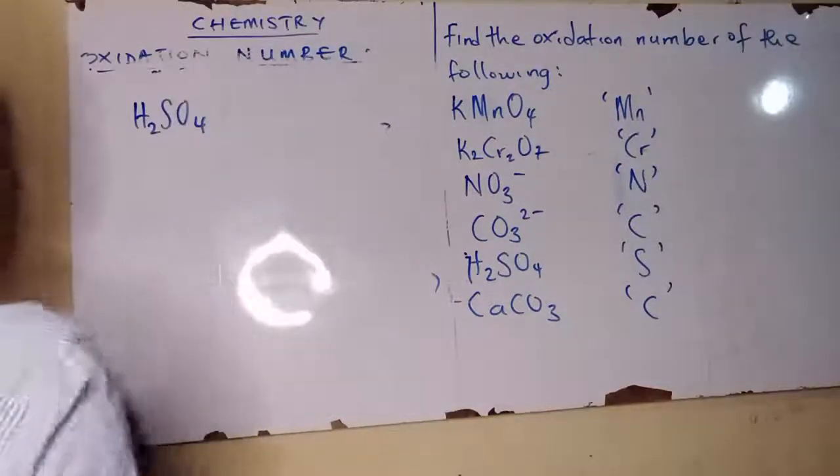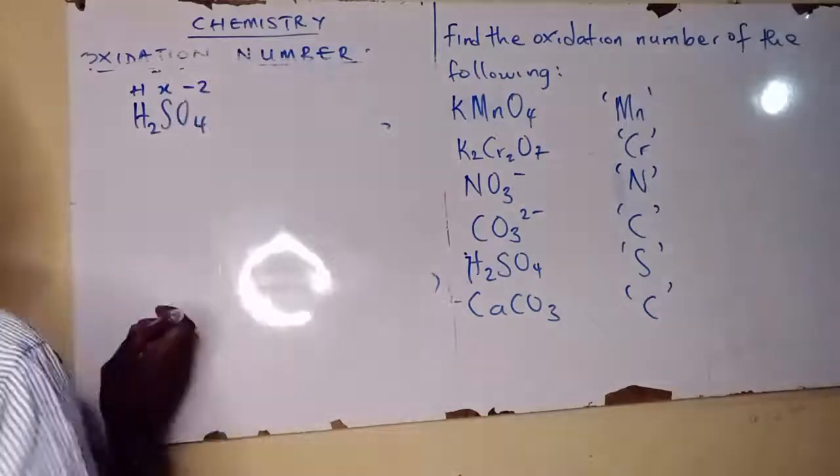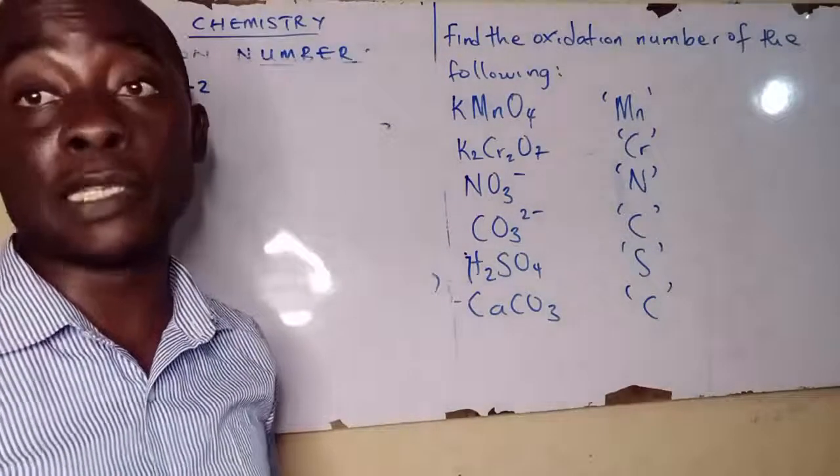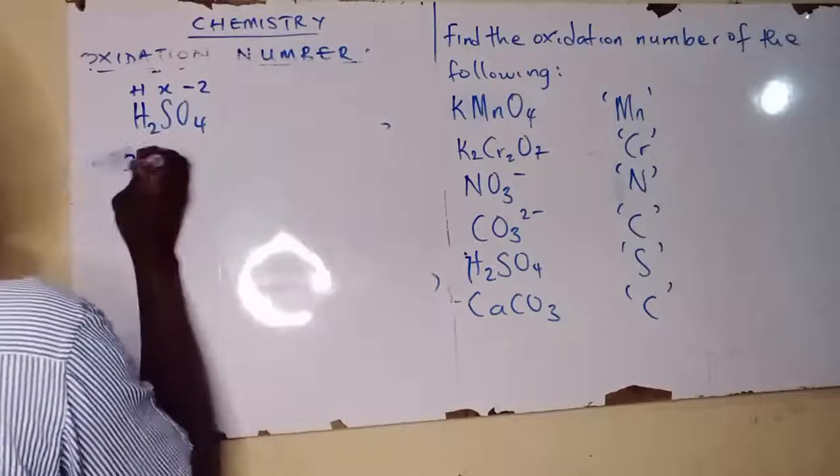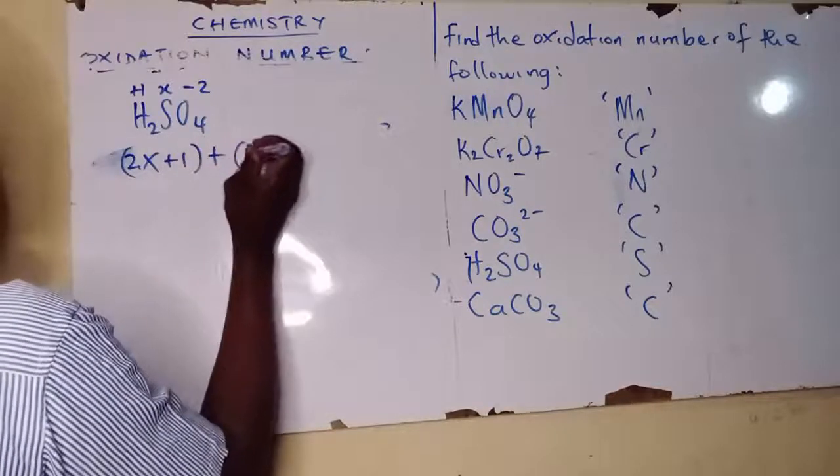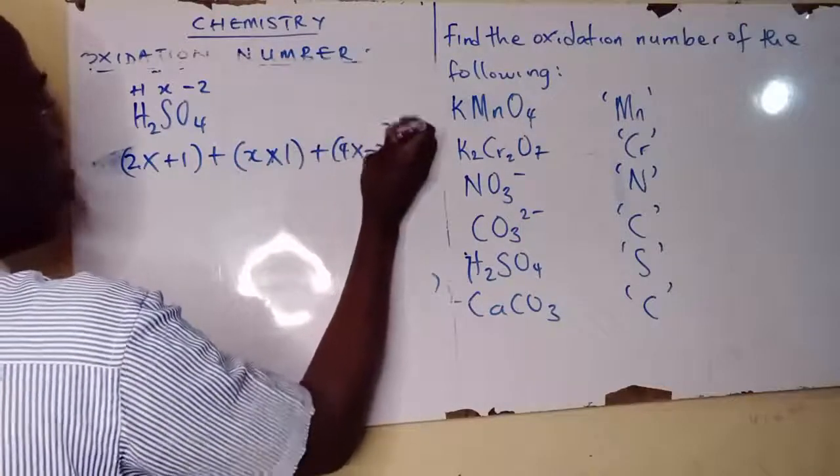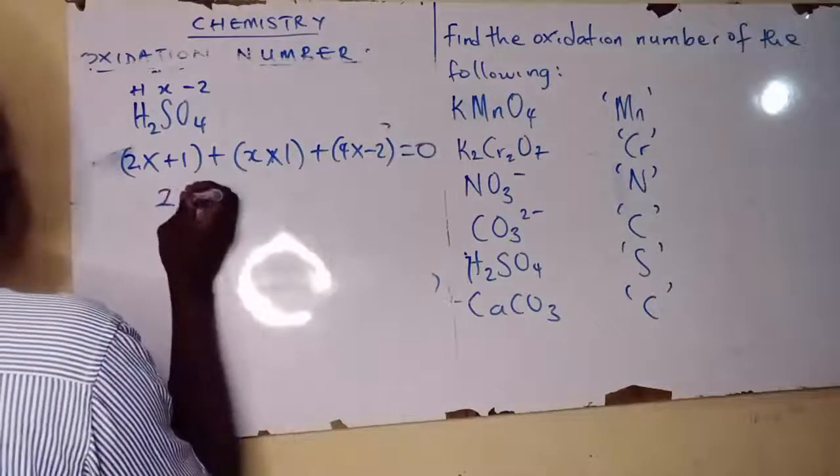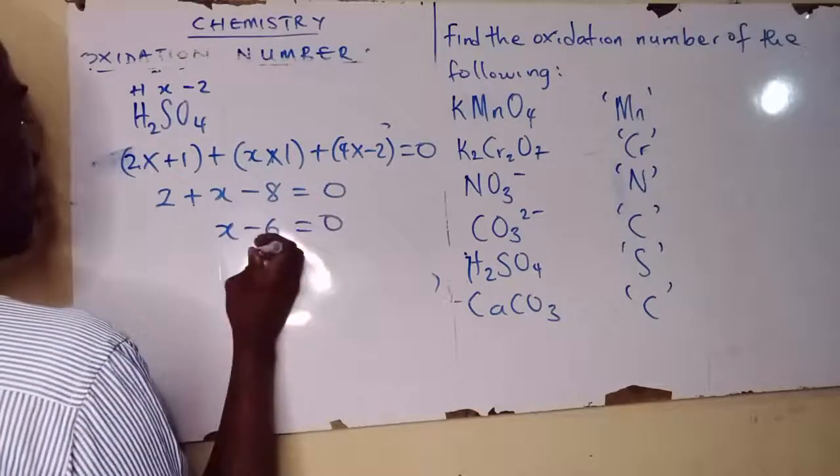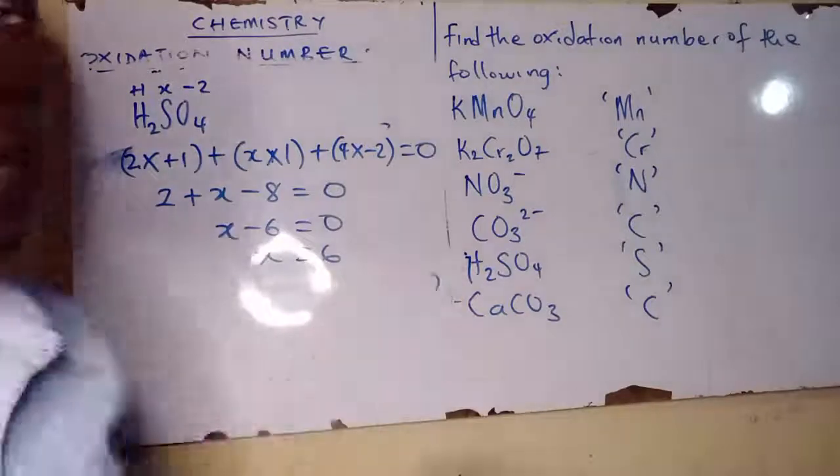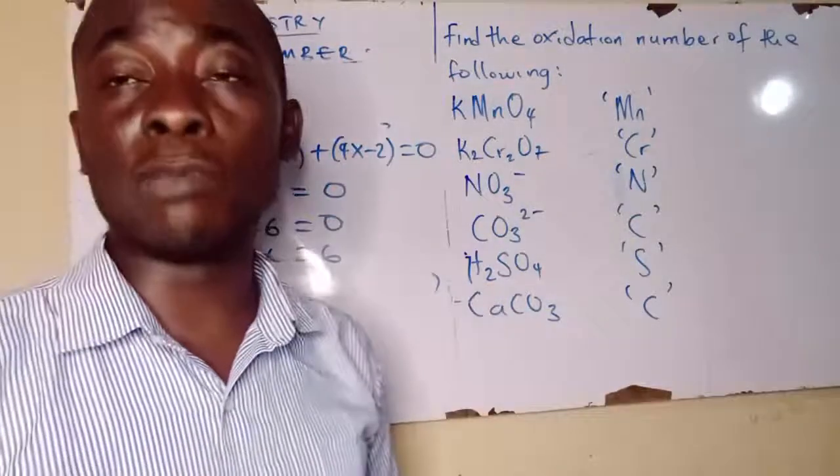H2SO4. Hydrogen is plus 1, sulfur is x, oxygen is minus 2. The total oxidation number is zero. So 2 times plus 1 plus x times 1 plus 4 times minus 2 equals to zero. We have 2 plus x minus 8 equals to zero. That means x minus 6 equals to zero. X equals to 6.